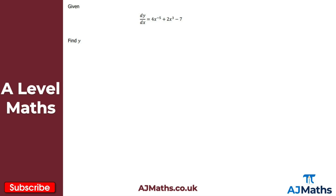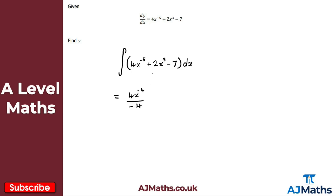For the last question, we're given dy/dx and want to find y. It's already in index notation, so we integrate 4x to the power of minus 5, plus 2x cubed, minus 7, all with respect to x, going term by term. For 4x to the minus 5: add 1 to get 4x to the minus 4, divide by minus 4. For 2x cubed: add 1 to get 2x to the power of 4, divide by 4. For the constant minus 7: multiply by x to get minus 7x. No limits on the integral, so we add the constant of integration, plus c.